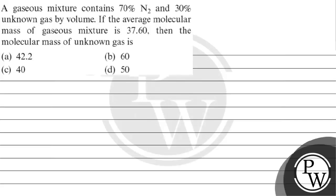Let's read this question. A gaseous mixture contains 70% nitrogen and 30% of an unknown gas by volume. If the average molecular mass of the gaseous mixture is 37.60, then the molecular mass of the unknown gas is: Option A is 42.2, Option B is 60, Option C is 40, and Option D is 50.